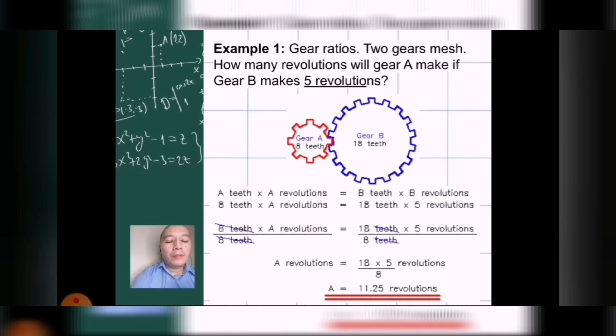So, here, please take note that when we wrote down 8 times A over 8, 8 is already cancelled. While on the other side, 18 times 5 revolutions over 8. The denominator is also 8, as what we have discussed earlier, we have to put in the denominator in order for the other part of the fraction to be cancelled. So, A revolutions is equal to 18 times 5 revolutions over 8. Thus, the answer is 11.25.